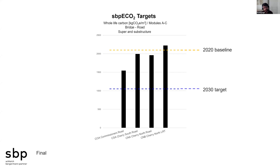We have a 2030 target — essentially a 50% reduction on the 2020 average baseline for a bridge, benchmarked as kilograms CO2 per meter squared. The light rail bridge was more carbon-intensive; the road and pedestrian bridges were lighter based on their spanning conditions. This gives a final benchmark to identify what could be improved for future projects and how we can design future bridges with lower embodied carbon.